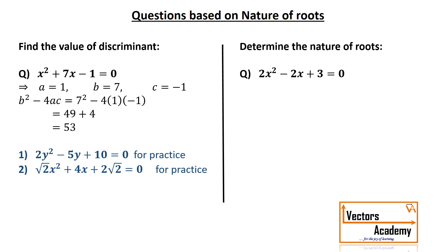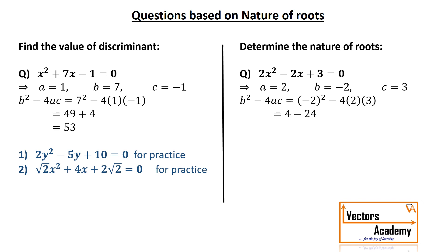For example, for the equation 2x² − 2x + 3 = 0, we identify the coefficients a, b, and c. Our discriminant is b² − 4ac. Substituting the values and simplifying, I get −20. Since −20 is a negative value, it is less than 0. Remember what is in the table — when the discriminant is negative, the roots are not real. This is how we solve this type of question.